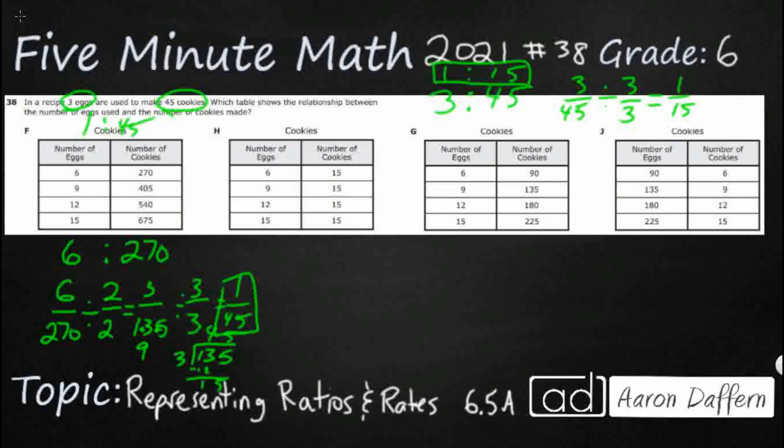So let's look at this one. I've got 6 to 15. So let's make that into a fraction. Divide each of these by 3, and I'm going to get 2 fifths. And that's as simplified as it can get, 2 fifths. It's not what I'm looking for. I'm looking for this 1 to 15. So H is not going to be it.